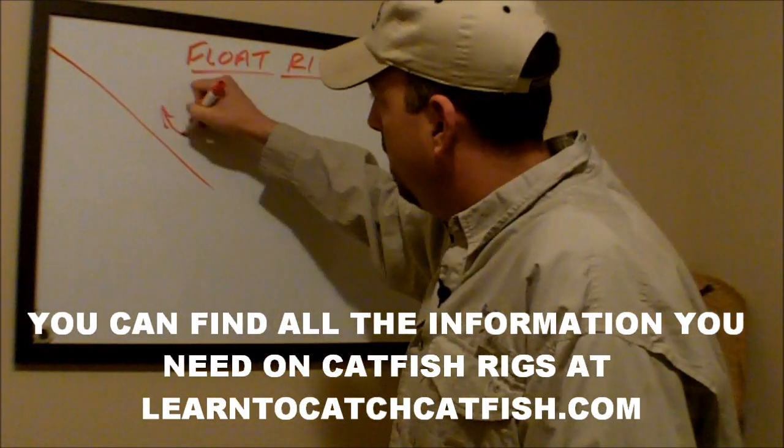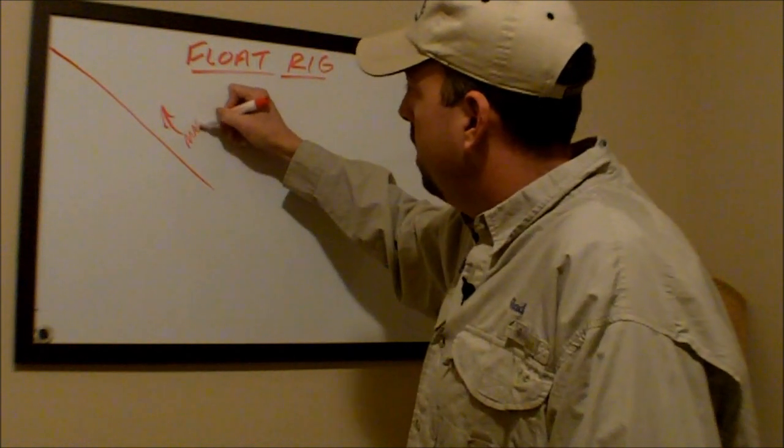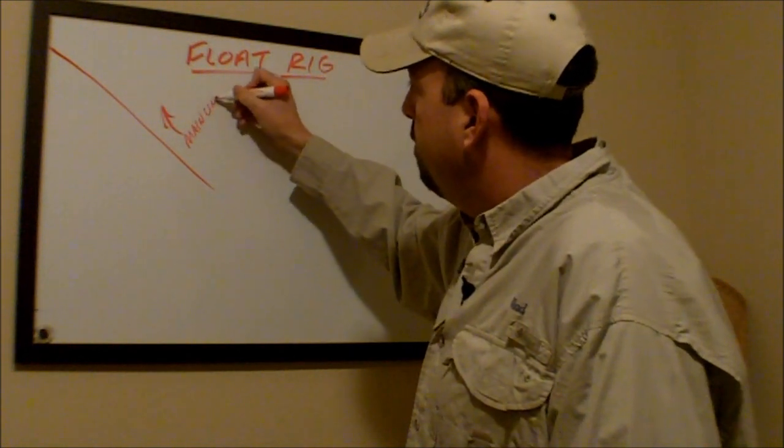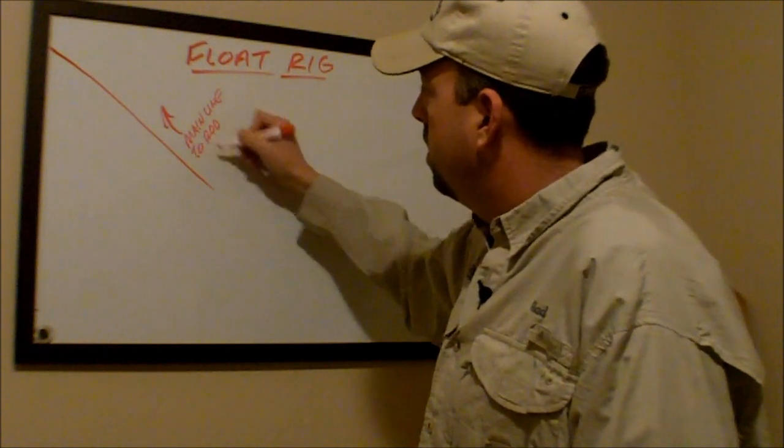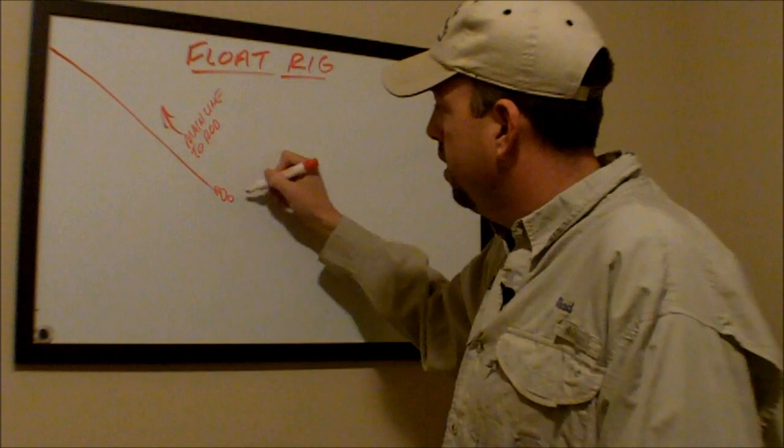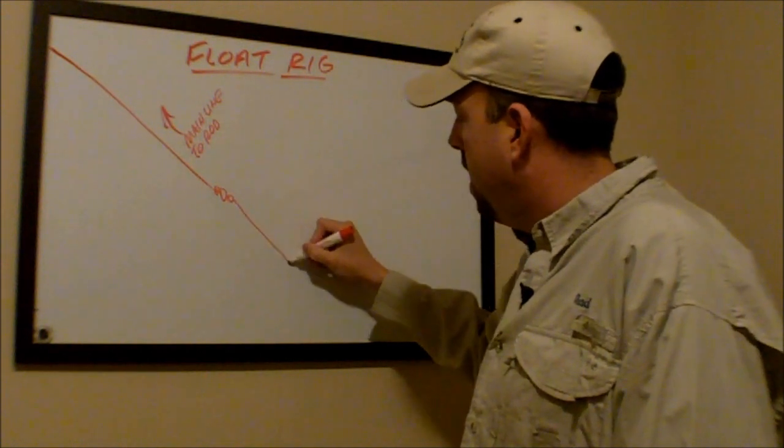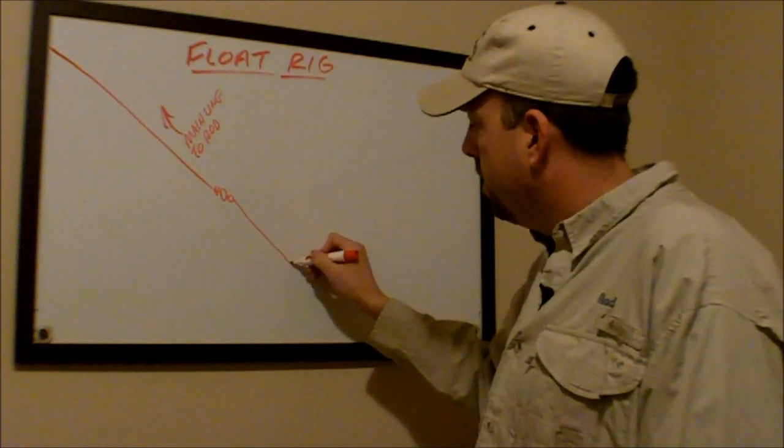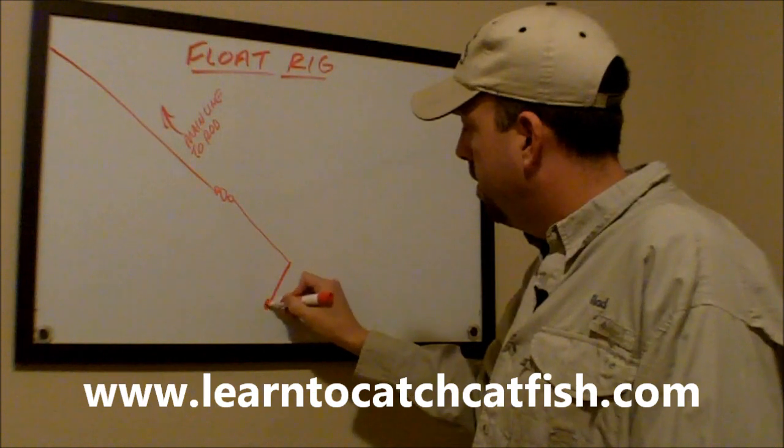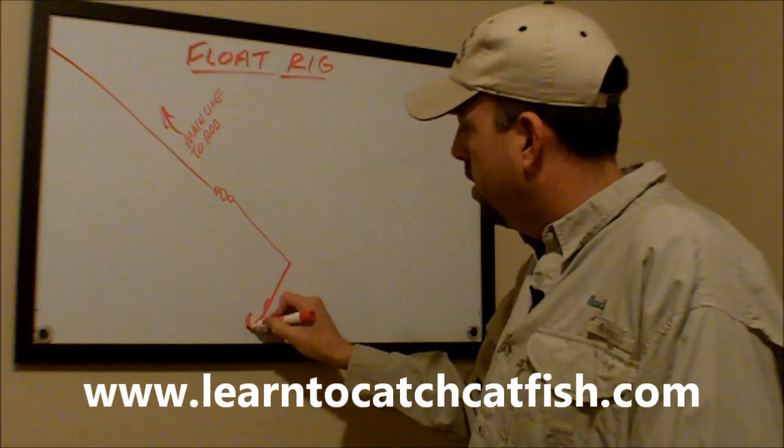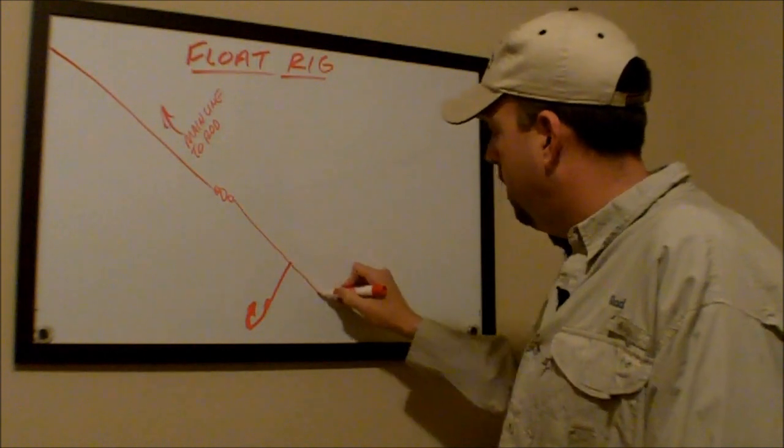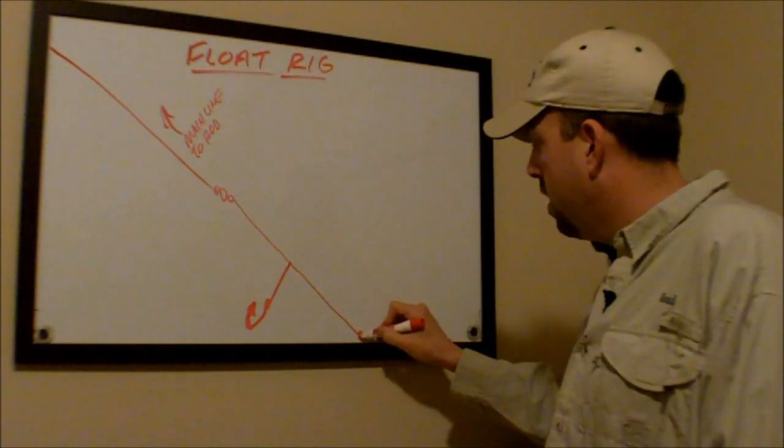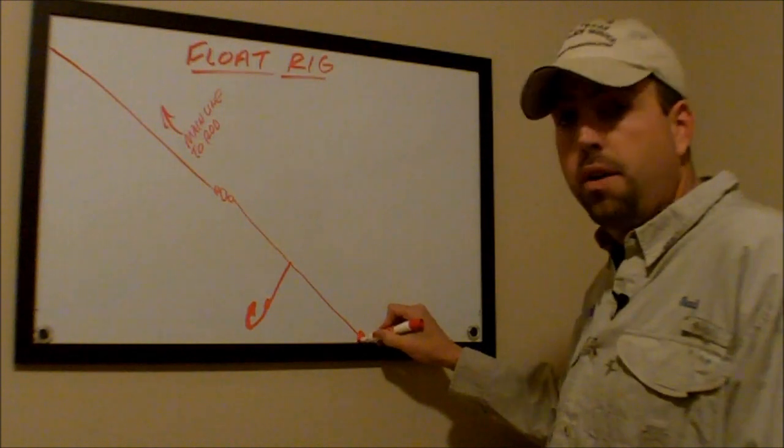You have your main line that's running to your fishing rod. You have a barrel swivel attached here. You have your leader with a hook running off of it. And then your line that comes down here and runs to your weight that sits on the bottom.